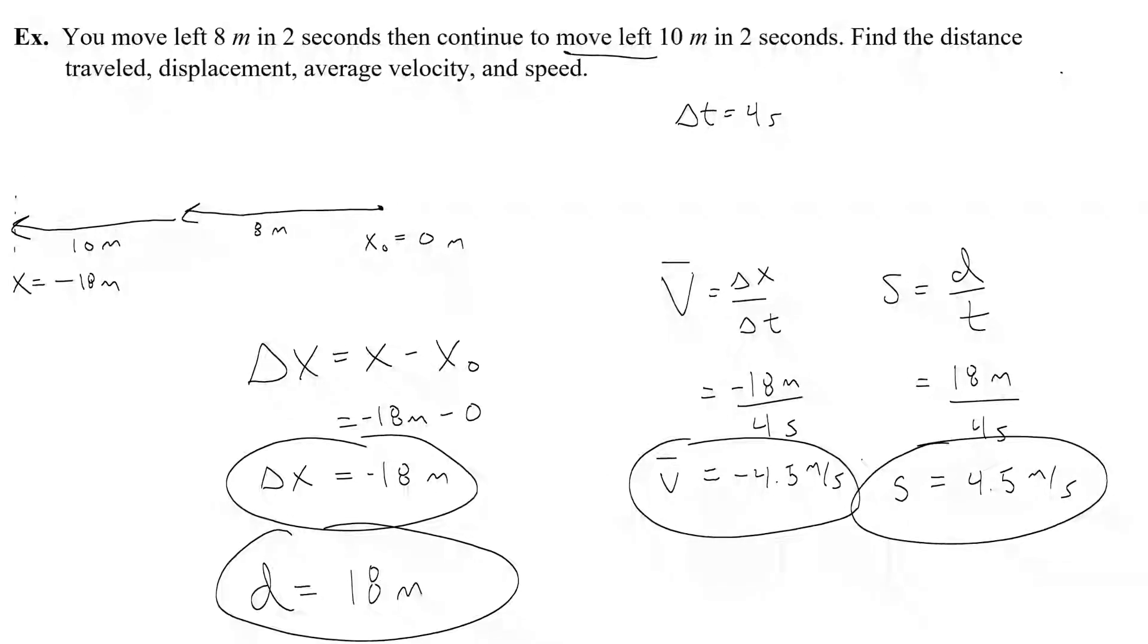Notice here that speed and velocity are basically the same thing, except that the negative is important for velocity, because it tells me that the change in my position over time is to the left. Speed isn't interested in that idea. Speed is just simply, how fast are you going? What is the total distance you've traveled over a total amount of time? So sometimes speed and distance, they have the same number, but not necessarily the same direction.